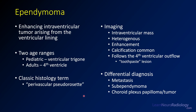This is the case of an ependymoma. Ependymomas are enhancing intraventricular tumors arising from the ventricular lining. They tend to have two age peaks — they occur in pediatric patients and in adults. In adults, they're most commonly in the fourth ventricle. The classic histology term is a perivascular pseudorosette — if you see that, it's the characteristic description of an ependymoma.